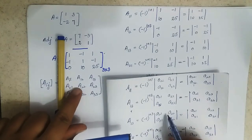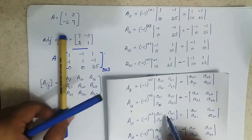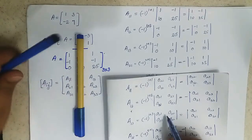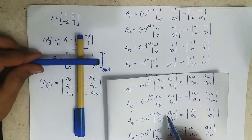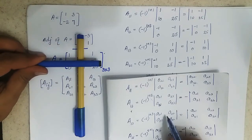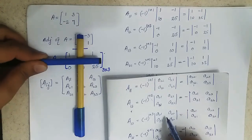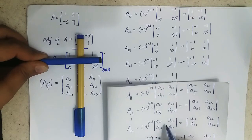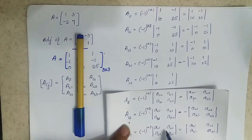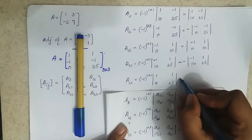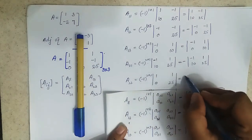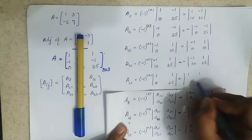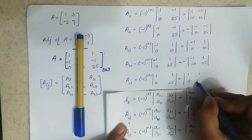For A22, the second row, second column element: leaving those, the inside elements are 1, 1, 0, and 25. Since the power is even, we write it as positive: 1, 1, 0, 25.